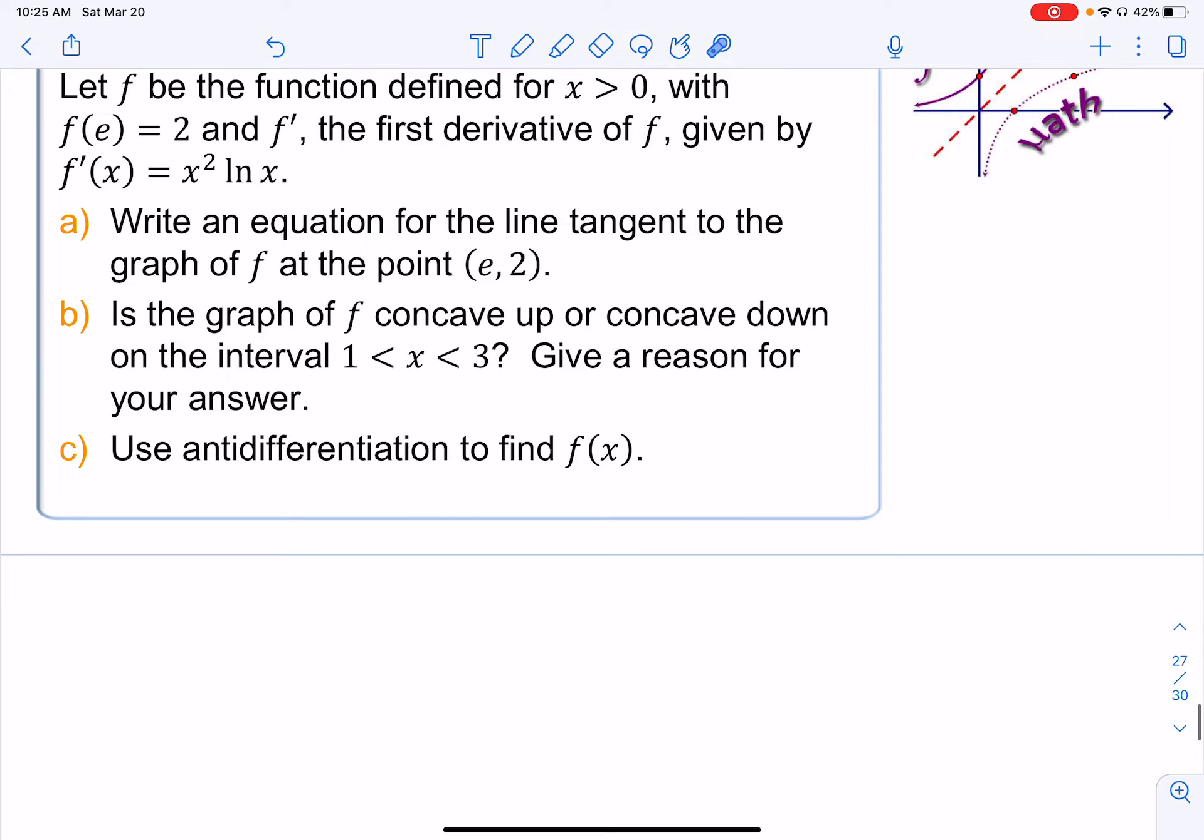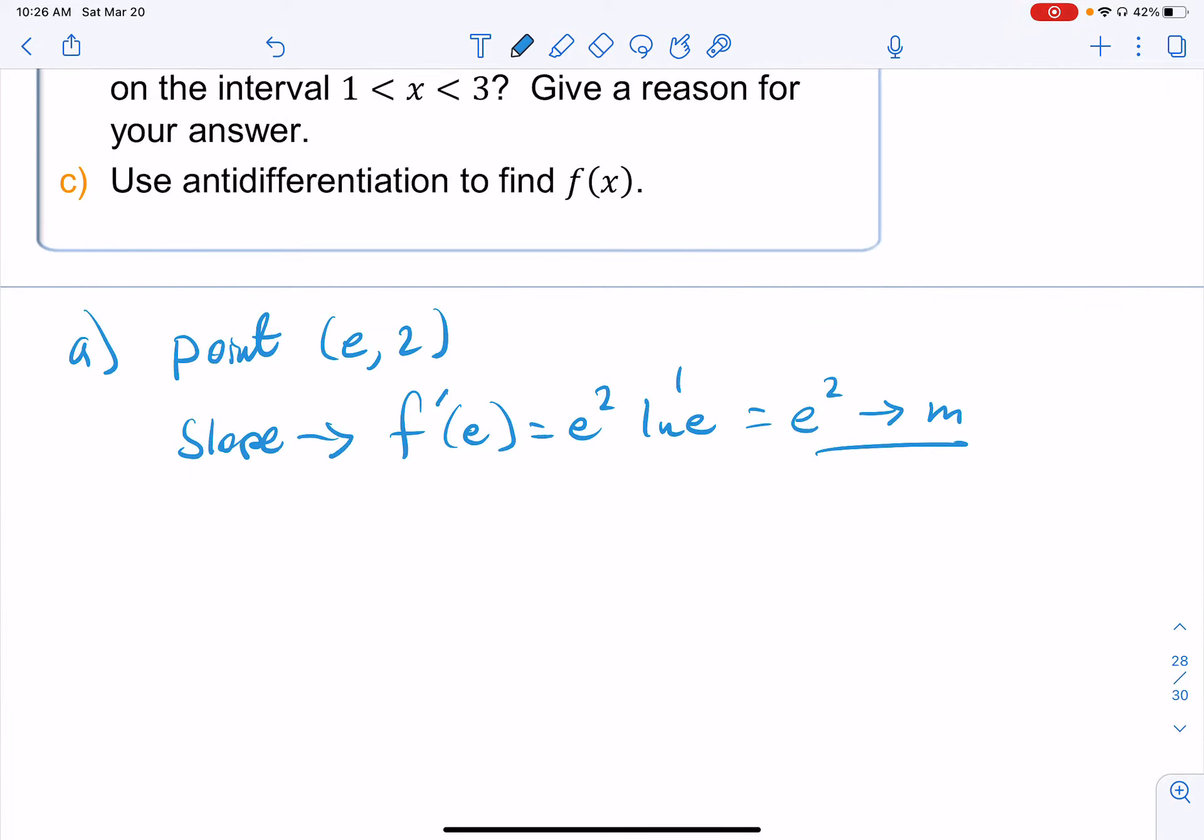All right, let's get started here. On the first and easiest part of all this, we want to find a tangent line. We need two things, a point, which is given to us as e comma 2, and we need a slope, which is going to be given to us by plugging our point into the derivative. We only need an x-coordinate, and our x-coordinate is e, so it's f prime of e is equal to e squared times the natural log of e. The natural log of e is just 1, so we have e squared as our slope.